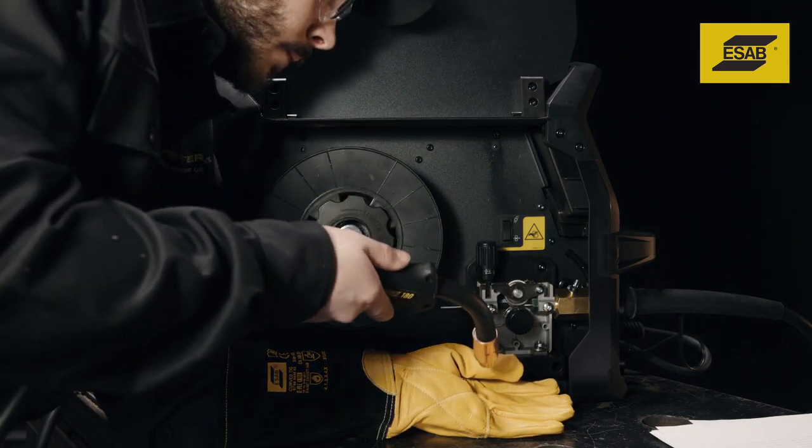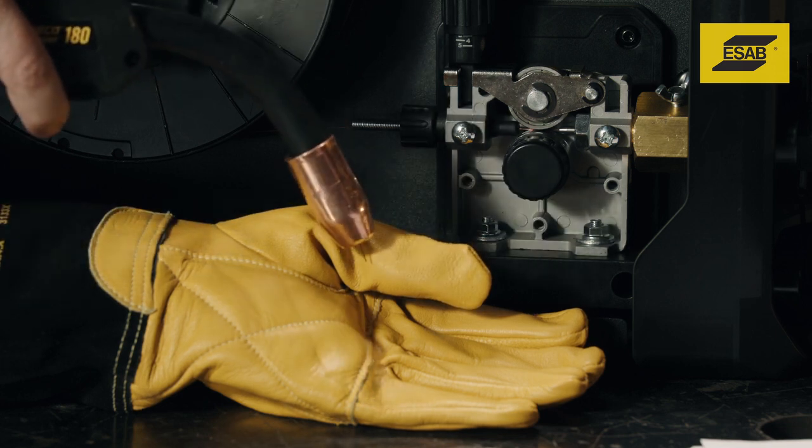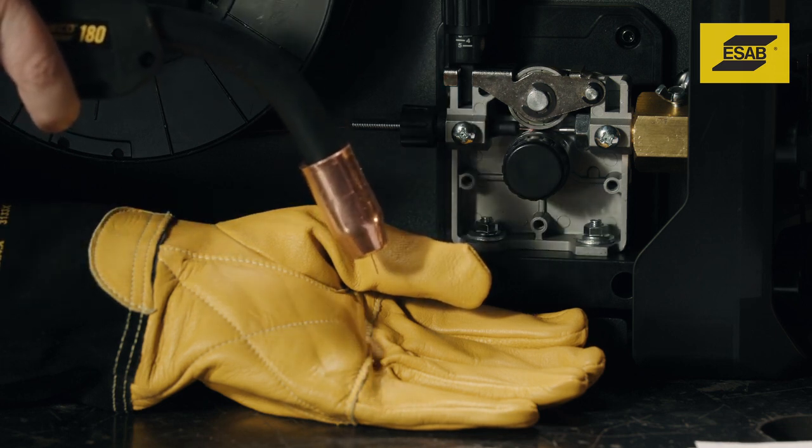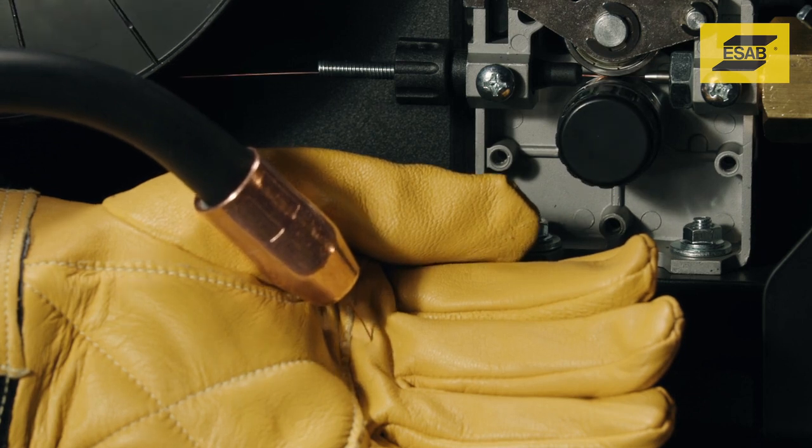To check tension, hold the gun nozzle an eighth of an inch from a non-conductive surface such as cement, tile, wood, or a heavy welding glove. Pull the trigger and the feed roller should start to slip.